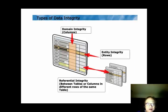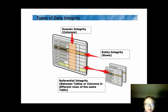We also need to learn about the concepts of data integrity. There are three types of data integrity. Domain integrity is about columns — we use the correct data type to enforce domain integrity. Entity integrity is about rows — we use the primary key to enforce entity integrity. Referential integrity can be between a pair of entities or different rows, and we also use the primary key to enforce referential integrity.